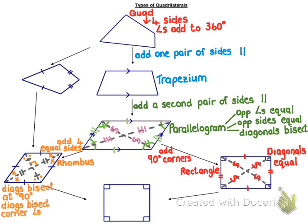Now if you marry a rhombus and a rectangle and take all of those properties and make them true in one shape, that shape is the most important quadrilateral of all. So if you take a rectangle and add four equal sides, or if you take a rhombus and add 90 degree corners, you get a square. The nice thing about a square is every single quality you can possibly imagine is true in a square. It's a type of parallelogram, a type of rectangle, and a type of rhombus. So everything we've written so far is true in a square.